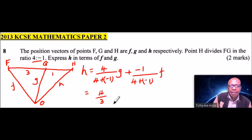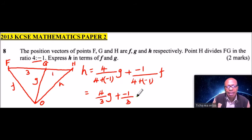not F, but G. Then we have plus, this will be minus 1 divided by 3, and that is the vector, we talk of the vector F, which we can write, it is 4 over 3, this is G minus 1 over 3F.